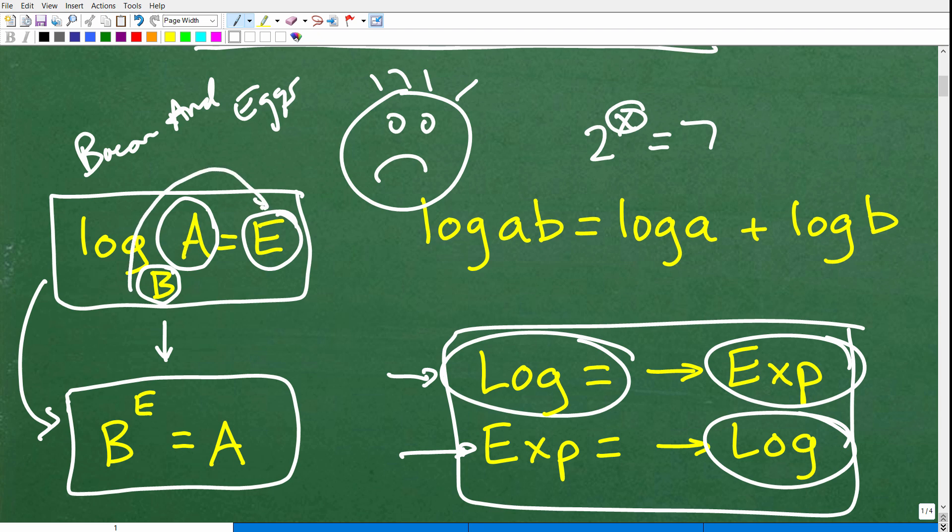Which means that you can rewrite a logarithmic expression as an exponential or power expression by saying the base to the exponent is equal to the answer. Like 2 to the 5th power is what? 32, right? So 2 is the base, 5 is the exponent, and the answer is 32. Base to the little exponent is equal to the answer. So you just shuffle these things around, and that's how you write a logarithm as a power. Just remember bacon and eggs.